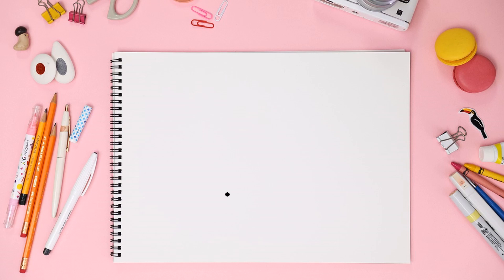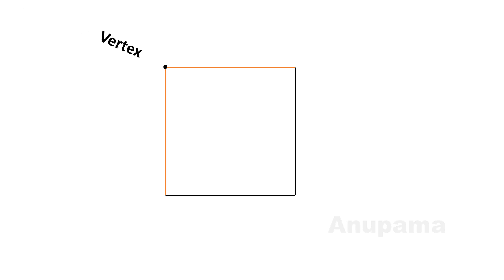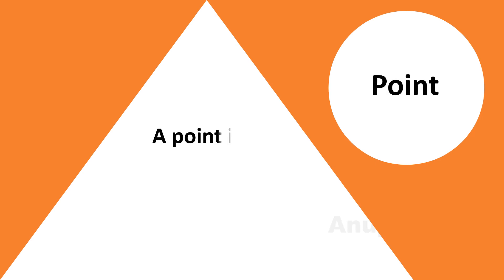It is a point. When we look at the sky at night, the distant stars appear as points. When we make a square on a sheet of paper, we can see there is a vertex of the square, which is the joint of two sides. This vertex is also an example of a point.